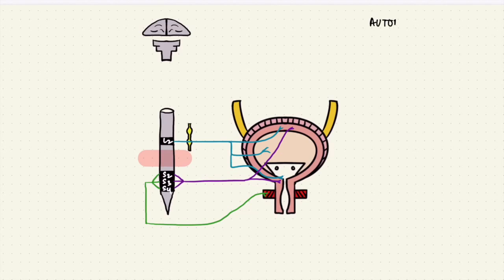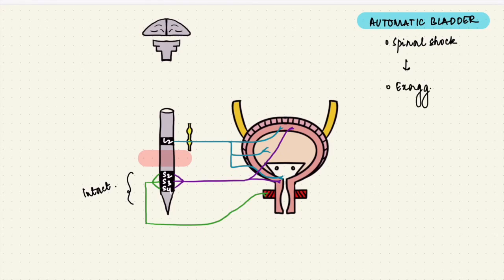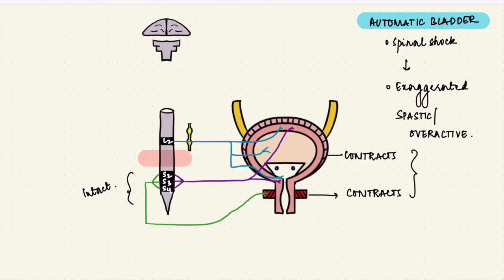An automatic bladder results from damage to the spinal cord above the sacral cord. The sacral cord is intact, so the reflex is intact. In the initial spinal shock phase, the reflex is suppressed because of the sudden loss of influence from the higher centers. But when it recovers, the reflex can be exaggerated. So there is a spastic, overactive bladder which empties too frequently. But if both the detrusor and the external sphincter are spastic at the same time, then it's called detrusor-sphincter dyssynergia.